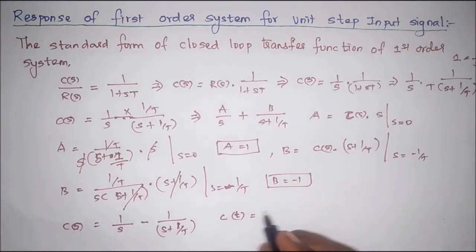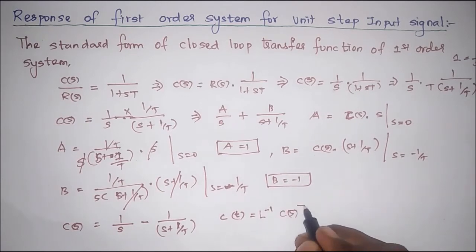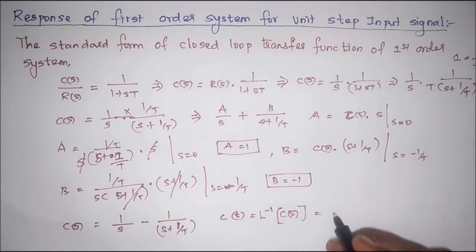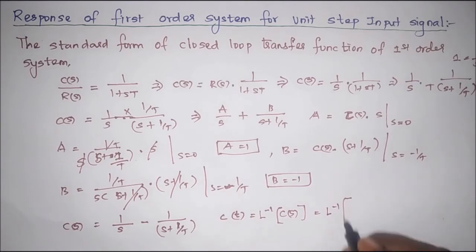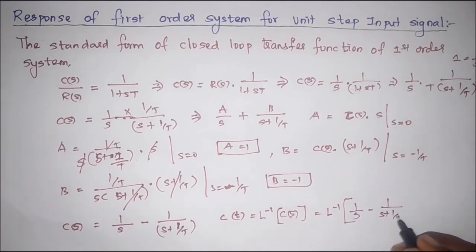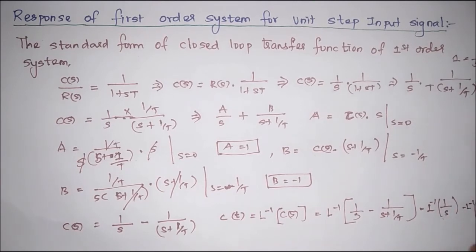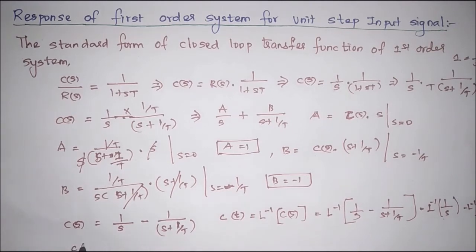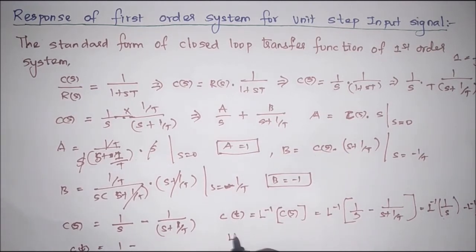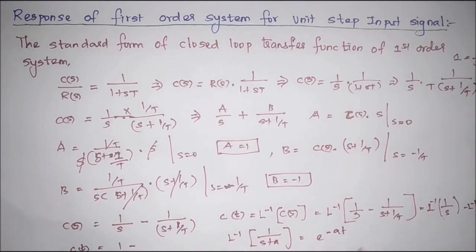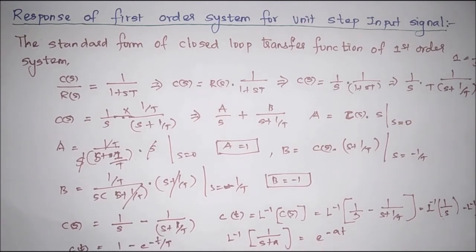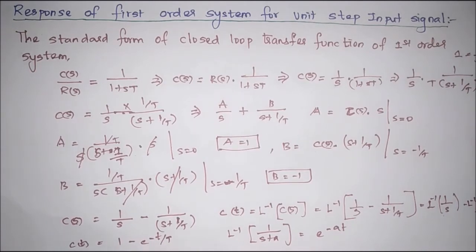To get C(t), we take the Laplace inverse transform of C(s). We apply the inverse Laplace transform individually: inverse of 1/s minus inverse of 1/(s plus 1/T). We know that the Laplace transform of 1/(s plus a) equals e to the power minus a times t. Therefore C(t) equals 1 minus e to the power minus t divided by T. This is the response of the system in the time domain for unit step input.